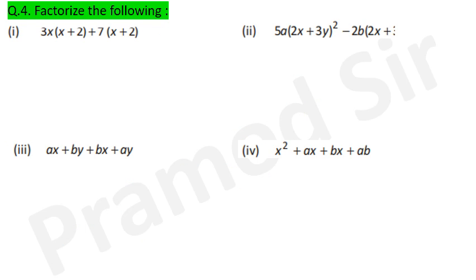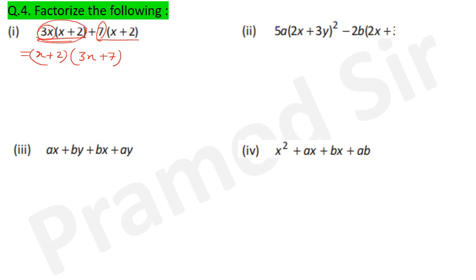Question 4 — factorize the following. Look: x+2 is matching. Take x+2 as common; what is left in the first term: 3x, and in the second: 7. Answer: (x+2)(3x + 7).